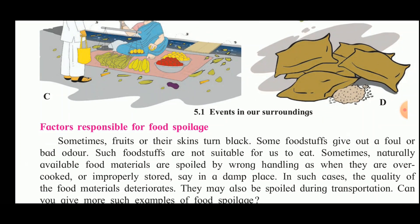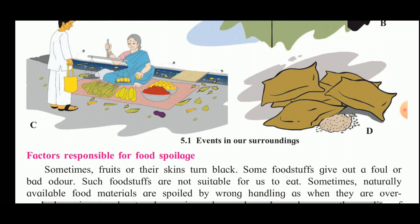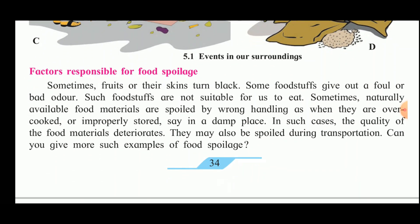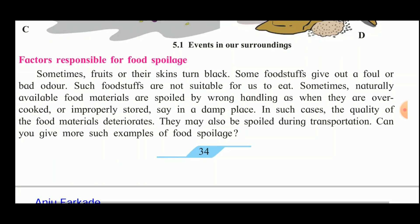All these things shown in the figure we observe around us. Factors responsible for food spoilage include: sometimes fruits or their skins turn black, some foodstuffs give out a foul or bad odour, and such foodstuffs are not suitable to eat. Sometimes naturally available food materials are spoiled by wrong handling — such as when they are overcooked or improperly stored in a damp place — and the quality of the food material deteriorates. They may also be spoiled during transportation.